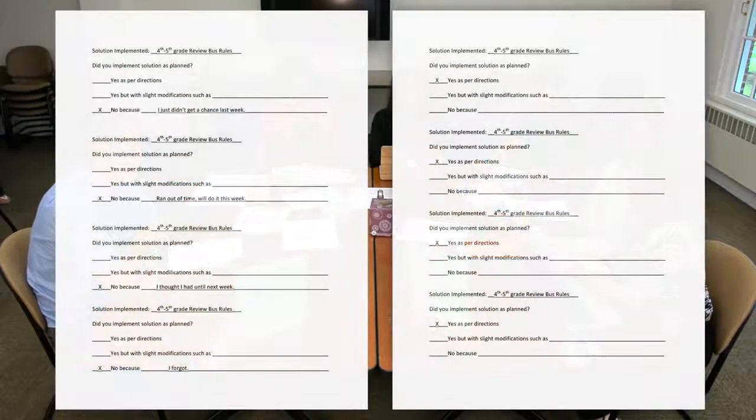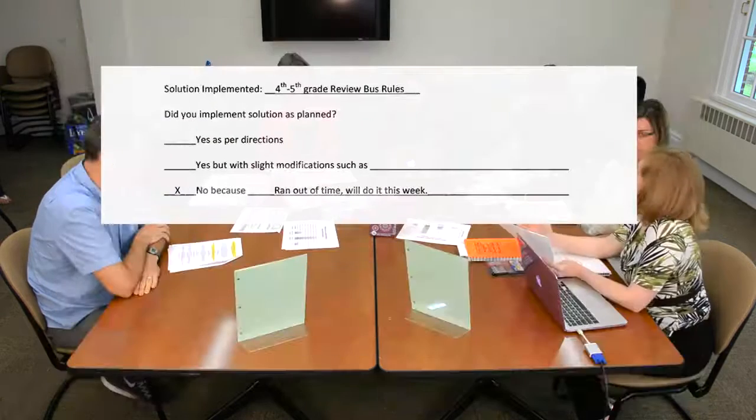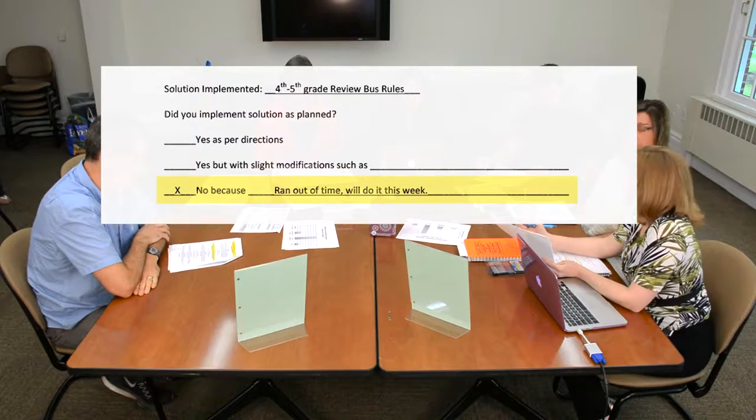Let's just keep going, and we can catch her up when she gets back. It doesn't sound like the bus problem is going so well. What did we say we were going to do, and did we implement it with fidelity? The two parts to the solution were: fourth and fifth grade teachers were going to review the bus rules with all students, and then Rhonda and the bus drivers were going to meet and assign bus seats. So I checked with the teachers — four out of the eight teachers were able to review the bus rules, so that's 50% fidelity. The reasons I was getting were things like 'I forgot,' 'I thought I had another week,' 'I ran out of time' — typical stuff that we all encounter.